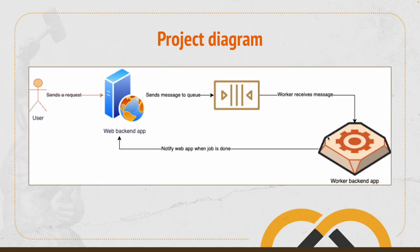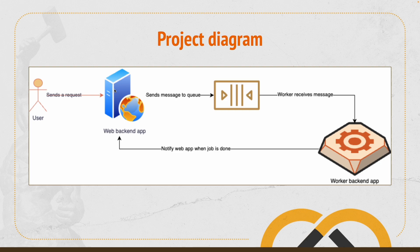Besides this, once the code finishes running, it's interesting to emit an event to whoever is interested in the results of the worker app. So we have the web backend app, which is the one that the user usually sends HTTP requests to. Then we send the message to a messaging queue like Kafka or RabbitMQ. The worker app receives this message and processes whatever needs to be done asynchronously. And once the process finishes running, it emits a notification back to whoever is interested — for example, sending the notification back to the web backend app.